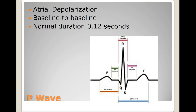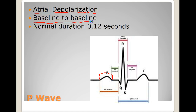Let's look at atrial depolarization — the P wave. The P wave goes from here to here, representing atrial depolarization or atrial contraction, happening simultaneously in the left and right atria. The baseline is from this point to this point. The normal duration of a P wave is 0.12 seconds.